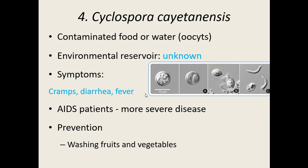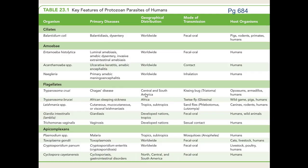This concludes our parasitic protozoans section — covered in Table 23.1 in your book, which summarizes the top ciliates, amoebas, flagellates, and apicomplexans that cause issues in humans. The next recording will cover all the parasitic helminths — the parasitic worms.